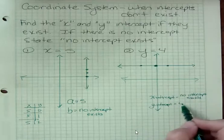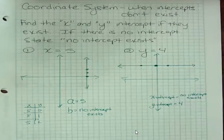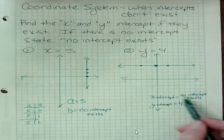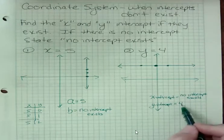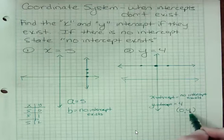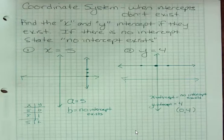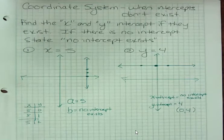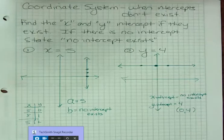Now, in this case, you would say no intercept exists. If you wanted to write this as an ordered pair, you know that x is 0 and y is 4. Okay, so sometimes there can be intercepts that don't exist, because it never intersects. Have a fantastic day.